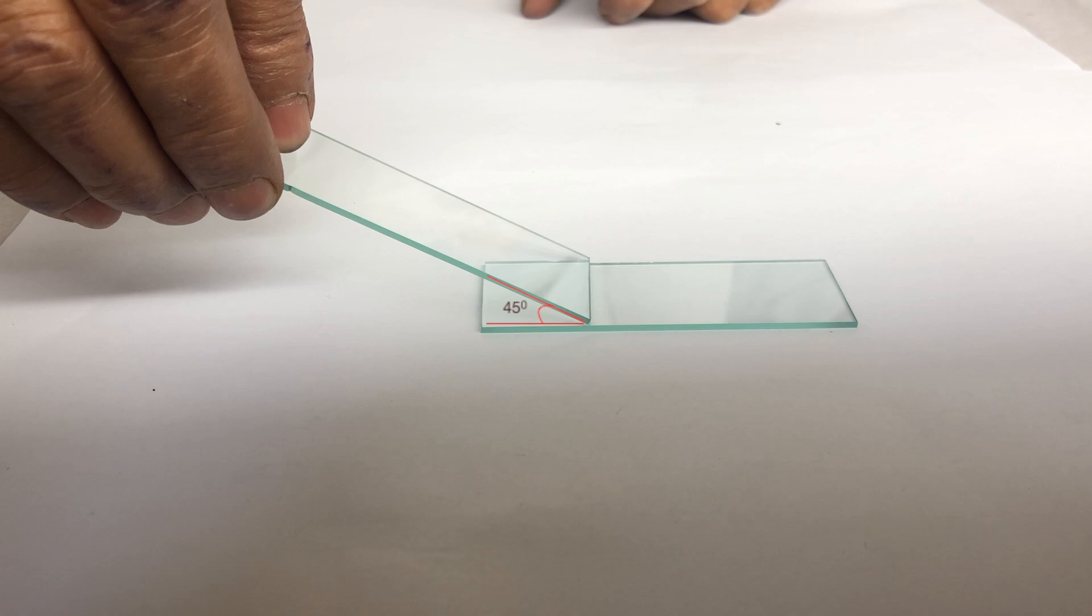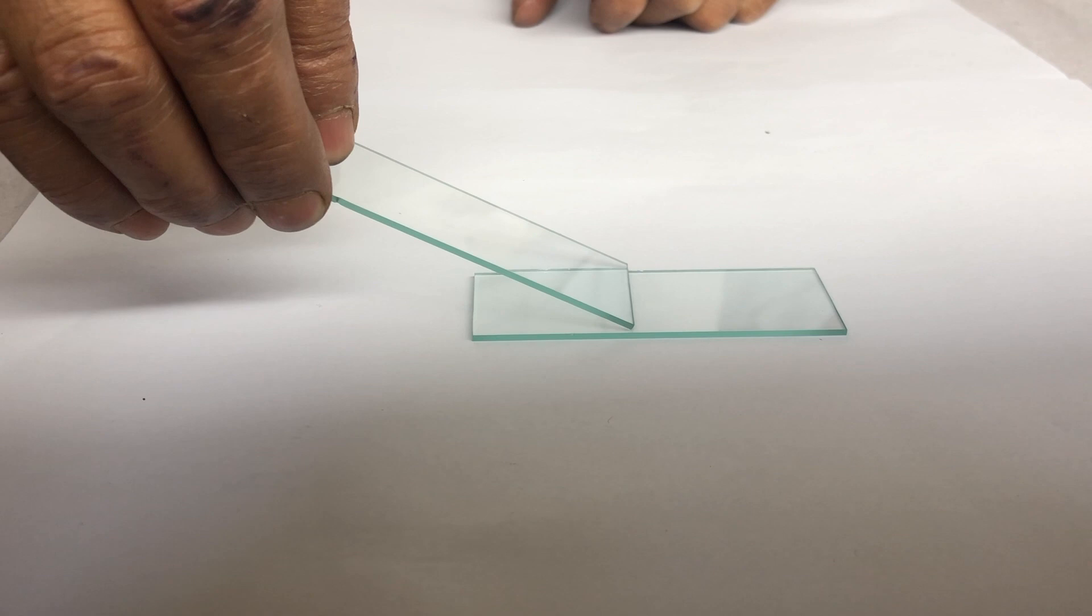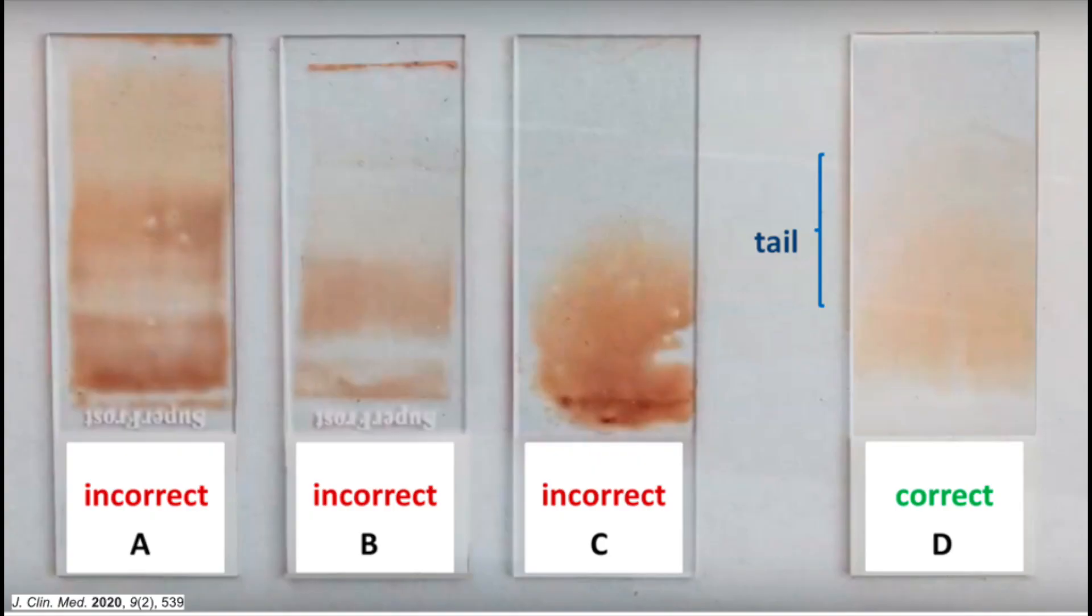Angle is very important for making a good film. Try to hold the spreader at around 45 degrees. The lesser the angle, the thinner and more uniform your film would be.